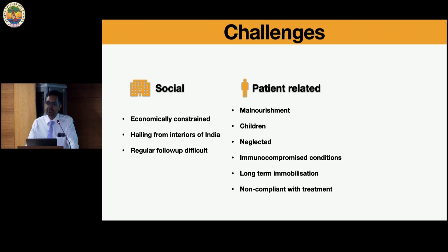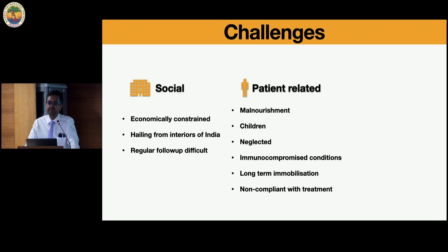There is also a patient-related dimension: most of these kids are malnourished with poor nutrition, which is the first thing we target. They are very young with immature, cartilaginous skeletons prone to more destruction. Quite often we see neglected females, elderly patients, and many who are immunocompromised with HIV.